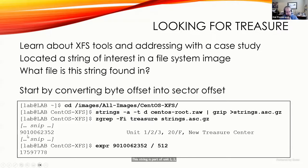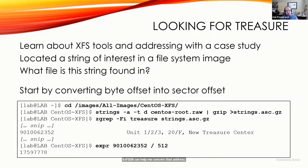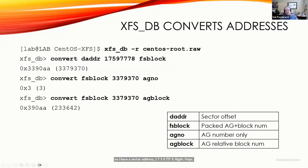The byte offset is what we see on screen. I want to convert that byte offset into a sector offset by dividing by 512 — the sector size — to get a sector offset of 17,597,778. That is the sector offset we'll start with. xfs_db can help convert that address and ultimately get back to a file name.